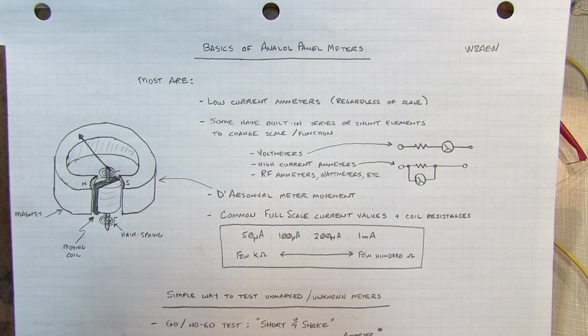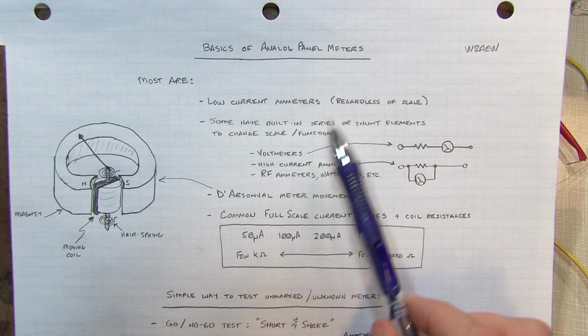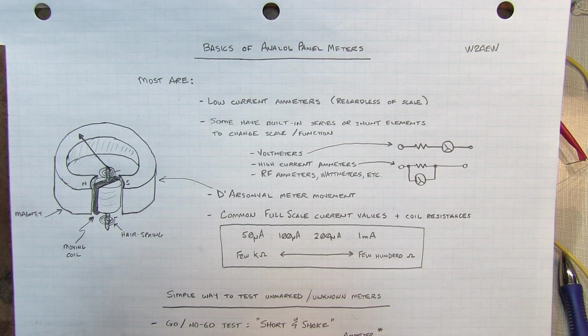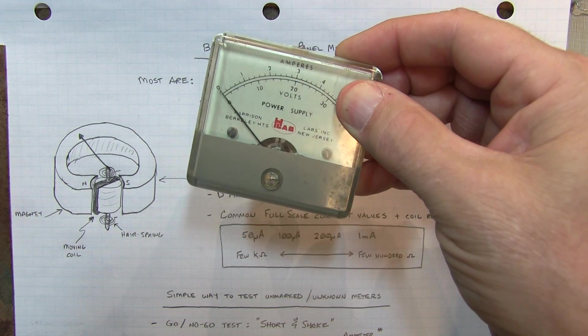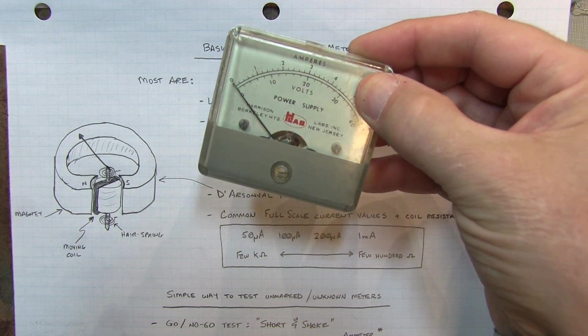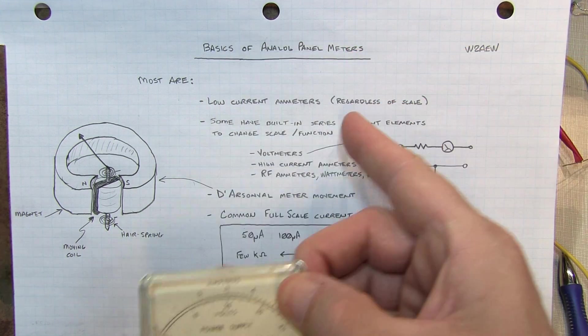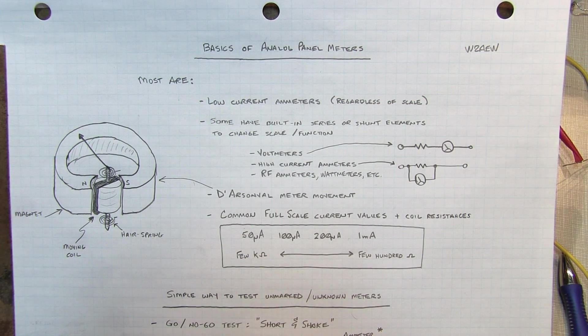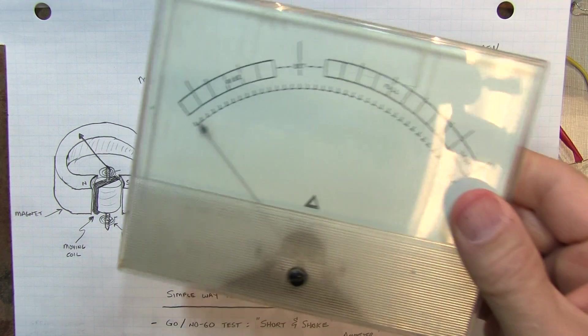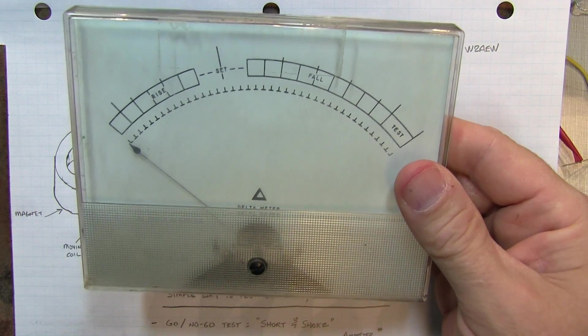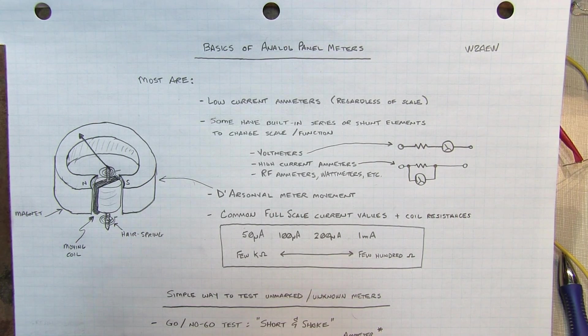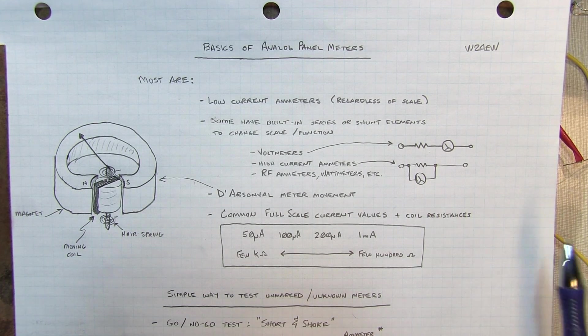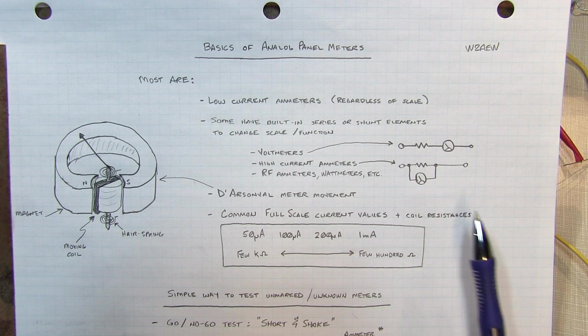Now the vast majority of these meters are simply just low current ammeters, regardless of what scale is printed on them. Here's an example of a meter that came out of an old power supply. It's got both a voltage and a current scale on it, but at the end of the day, it's just a low current ammeter. Here's another example of a very large panel meter that has a very oddball scale on it, but at the end of the day, the meter responds to a small amount of DC current.